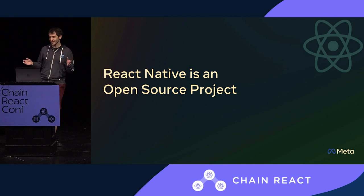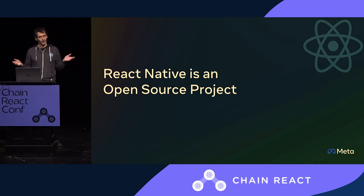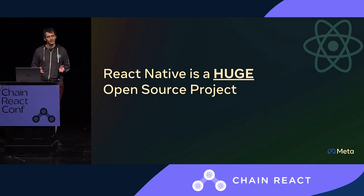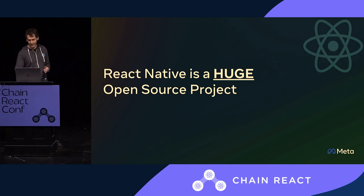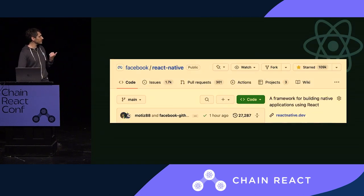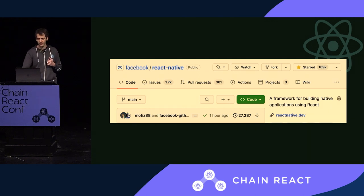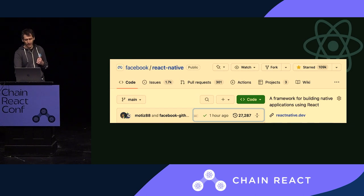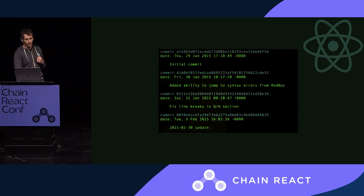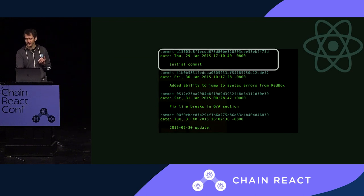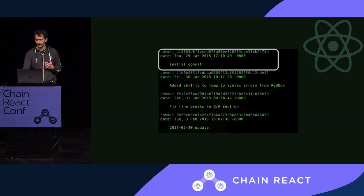React Native is an open source project, as everyone knows. But it's not just that, it's quite a big one. I'm going to show you some numbers. Let's start with the number of commits — we have more than 27,000 commits, which is kind of impressive. And the first commit arrived in 2015, so it's like eight years of a framework lifetime, which is a good amount of time.